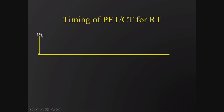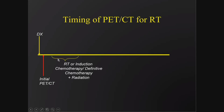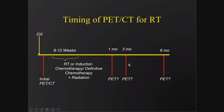Looking at the timing of PET CT for radiation therapy: if you're diagnosed with lung cancer, hopefully you can get the initial PET CT quickly. Depending on your histology and whether you have more advanced cancer, you may get radiation therapy. After radiation therapy — which can take about 8 to 12 weeks — when should you get your first PET scan? At one month? Three months? Six months? The longer you wait, the higher your specificity, but clinicians often need to make management decisions and patients don't want to wait long.